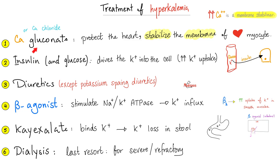Calcium stabilizes membranes by interfering with sodium entry into excitable tissue. When sodium is not entering, depolarization by sodium is not happening, which stabilizes the membrane. For hyperkalemia, give insulin to push potassium into the cell — but don't forget to give glucose as well, because insulin will also push glucose into the cell. If you give insulin without glucose, the patient can develop hypoglycemia. That's why when you give insulin, give glucose with it.